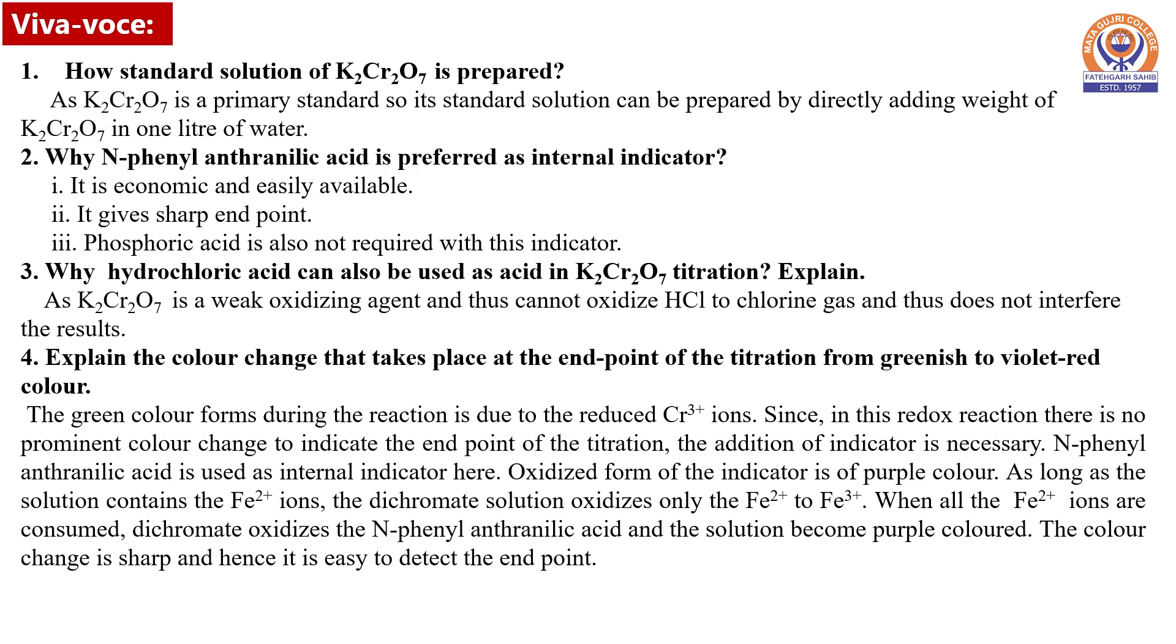N-phenyl anthranilic acid is used as internal indicator. The oxidized form of the indicator is purple in color. As long as the solution contains ferrous ions, the dichromate solution oxidizes only the ferrous ions to ferric ions.